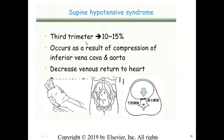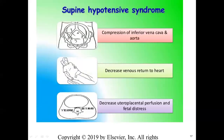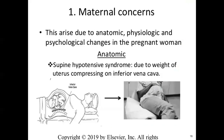During the third trimester, maternal supine hypotension syndrome is more common. It occurs as a result of compression on the inferior vena cava and aorta, decreasing venous return to the heart. This decreases uteroplacental perfusion, meaning oxygen supply is reduced — both can lead to fetal distress. To avoid it, tell the mother to use left lateral positioning.